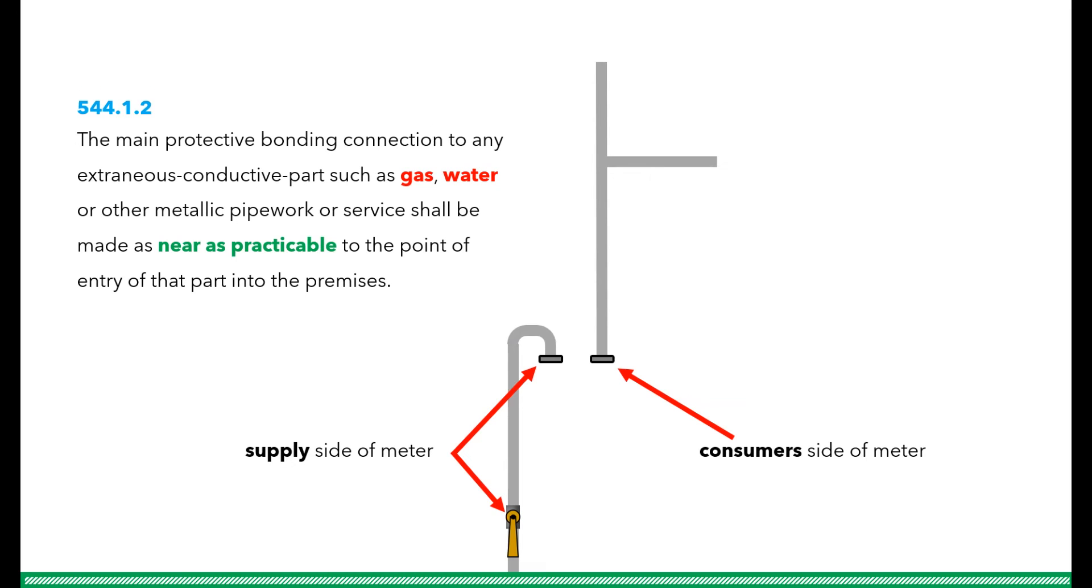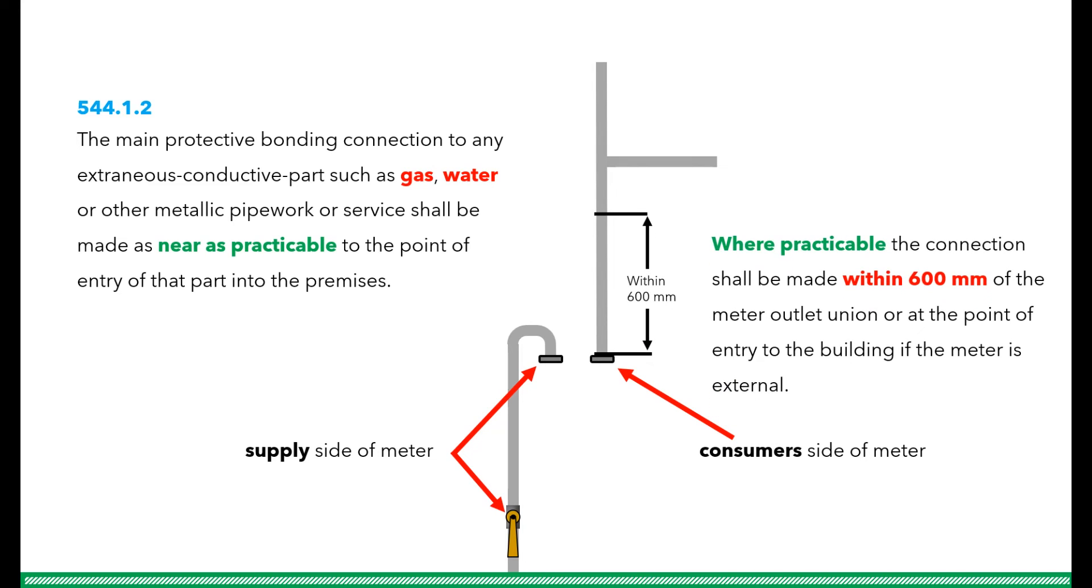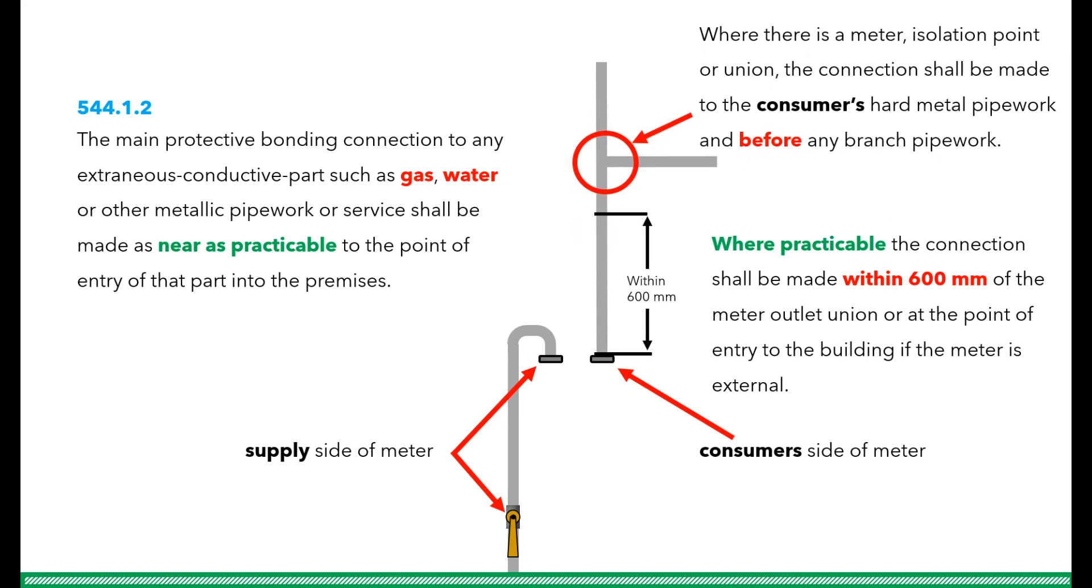This is why we bond the pipe work, as near as is reasonably practical at the point of entry. Where there is a gas meter, the connection should be made on the consumer side of the gas meter within 600mm, not on the supply side for the reasons we have just been discussing as that would be pointless. And just in case the gas fitters want to adjust the pipe work, we also try to ensure that it is before the first join, union or branch in the pipe work.